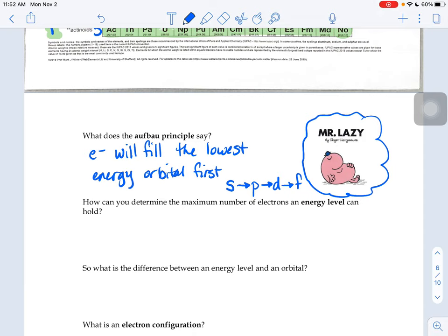So that's orbitals, electron clouds, the S, P, D, F. But then there's also these energy levels, the numbers, right, that we represent with N.